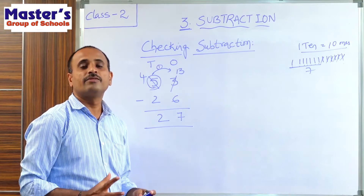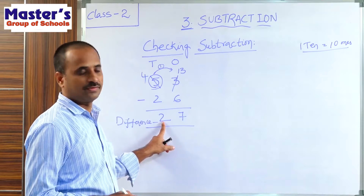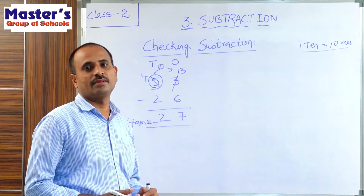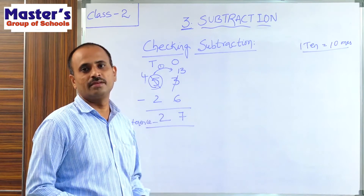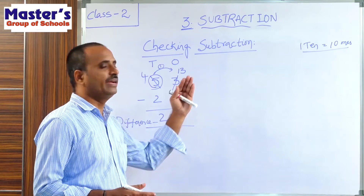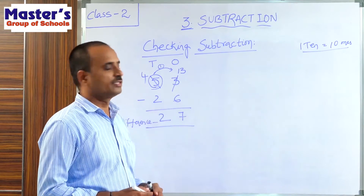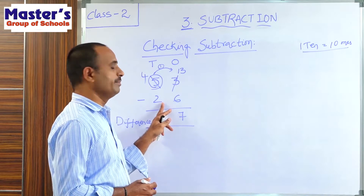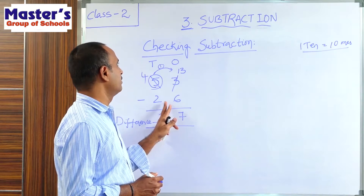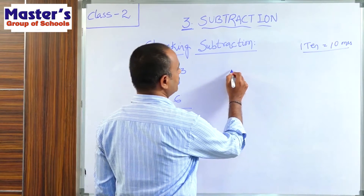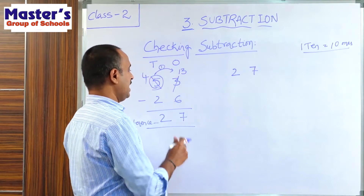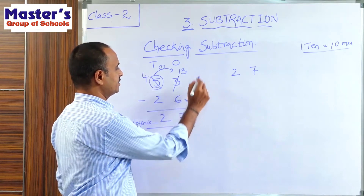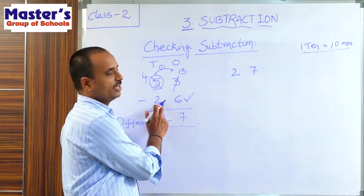Our task is to check whether this answer is correct or not. The difference is 27. We can verify whether this subtraction is correct or not using addition. To check, add the difference to the smallest number in the subtraction. The difference is 27, so write 27 first.